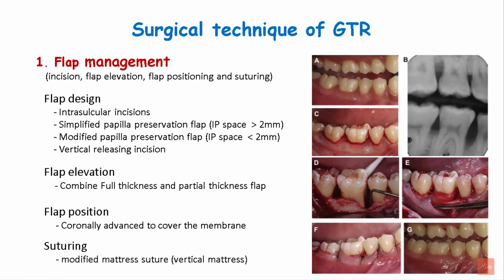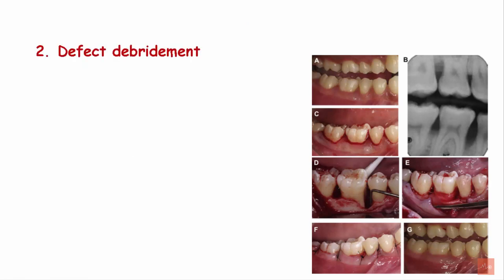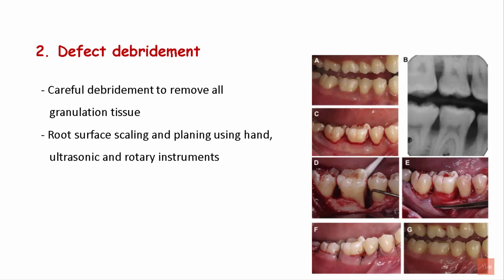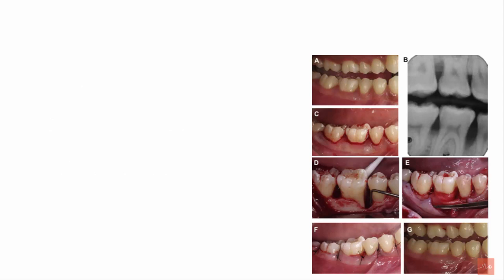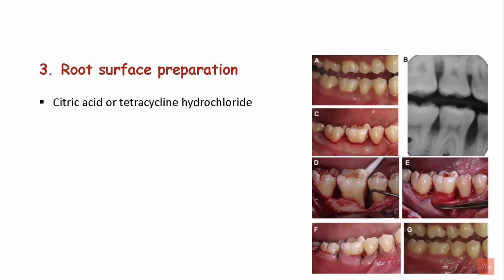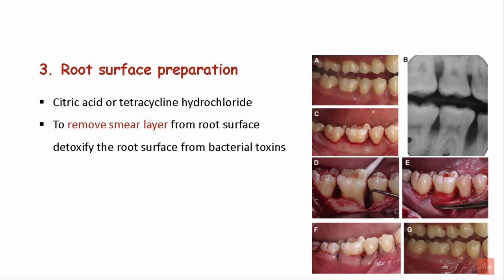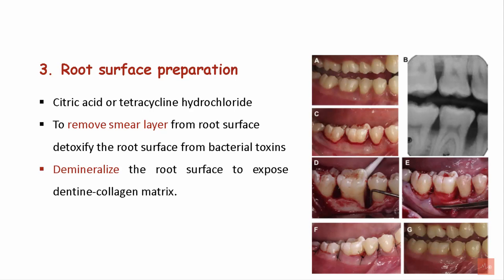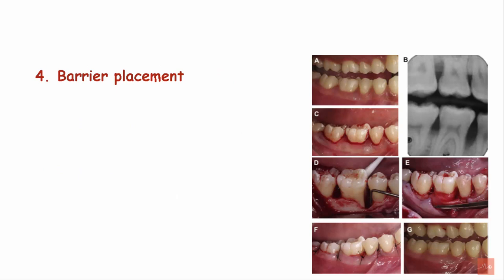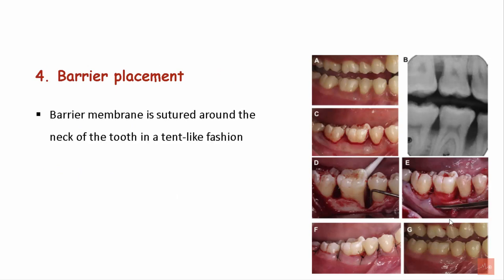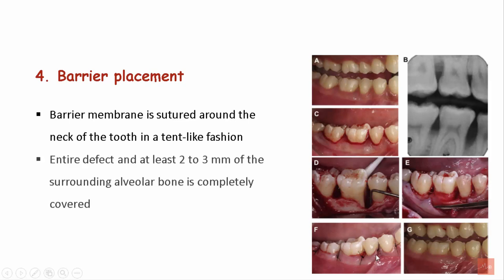Suturing involves a modified mattress suture. The second step is defect debridement — the defect is completely debrided to remove all the granulation tissue, followed by scaling and root planing using hand, ultrasonic, and rotary instruments, and odontoplasty if needed. The next step is root surface preparation, achieved through citric acid or tetracycline hydrochloride, which removes the smear layer, detoxifies the root surface from bacterial toxins, and demineralizes the root surface to expose the dentine collagen matrix. This is followed by barrier placement, where the barrier membrane is sutured around the neck of the tooth in a tent-like fashion, covering the entire defect and at least 2–3 mm of the surrounding alveolar bone.